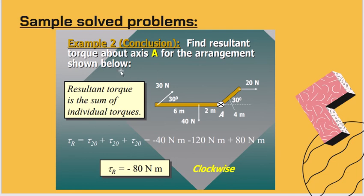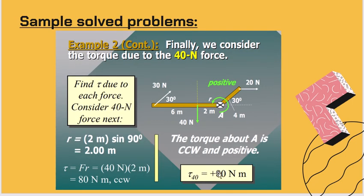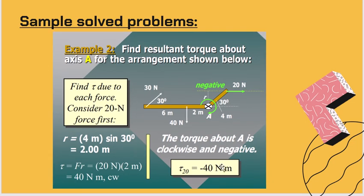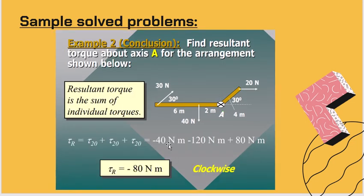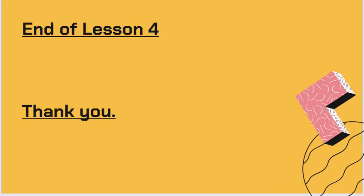Finally, find the resultant. The resultant is the summation of all given torques about axis A. We have −40, −120, and +80. Computing: negative 40 minus 120 plus 80 equals negative 80 N·m. So the resultant torque is −80 N·m, meaning clockwise. That's the end of our lesson on Chapter 4, and I hope you understand the lesson about the moment of force. Thank you and have a nice day.